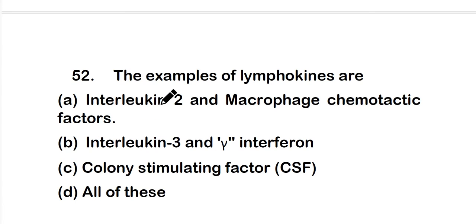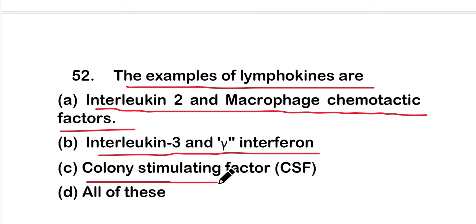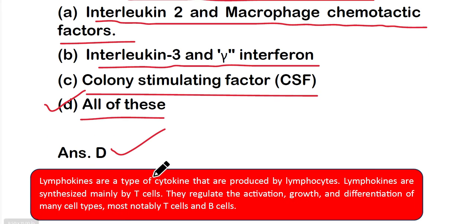Question 52: Examples of lymphokines are option A interleukin-2 and macrophage chemotactic factor, option B interleukin-3 and gamma interferon, option C colony stimulating factor, or option D all of these. The right answer is option D — interleukin-2, macrophage chemotactic factor, interleukin-3, gamma interferon, and colony stimulating factor are all lymphokines. Lymphokines are a type of cytokine produced by lymphocytes, synthesized mainly by T cells, and regulate activation, growth, and differentiation of T cells and B cells.